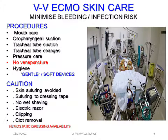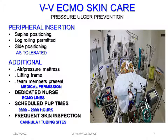For skin care, the priority is to minimize bleeding and infection risk. Procedures include mouth care, oropharyngeal suction, and tracheal tube suction — most patients will likely have a tracheostomy tube given the long-term nature of the procedure. No venous or arterial punctures should be performed. All hygiene is done gently. Skin suturing is avoided; suturing is done to dressing tape only. No wet shaving — an electric razor and clipping are used. Haemostatic dressings should always be available.